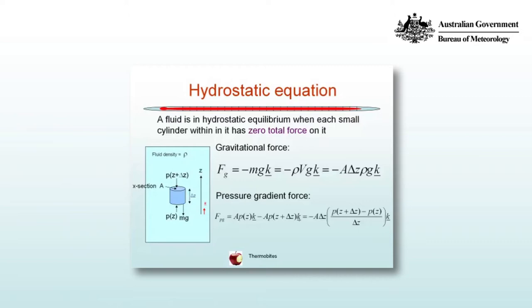Now the two forces acting upon the cylinder are the gravitational force and the pressure gradient force. The gravitational force is minus mgk where gravity acts downwards. We have a fluid of density rho so the mass of the cylinder is rho times v where v is the volume. The volume of the cylinder is the cross-sectional area A by its height delta z. So the gravitational force is minus A delta z rho g in the k direction.